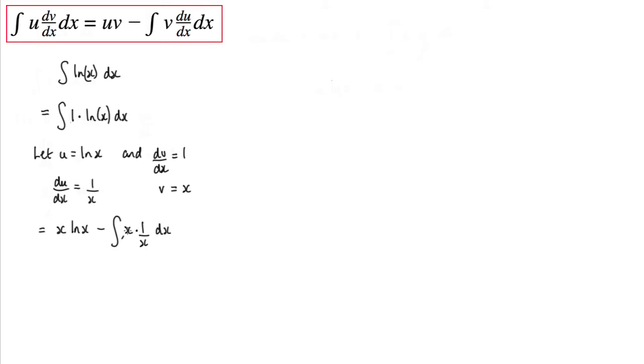Now this x here will cancel with this x here. So what we're left with is x log x minus the integral of 1 dx. And that's a very simple integral to contend with. So we have x log x minus, and the integral of 1 is just x. And we need to just add on the constant of integration.